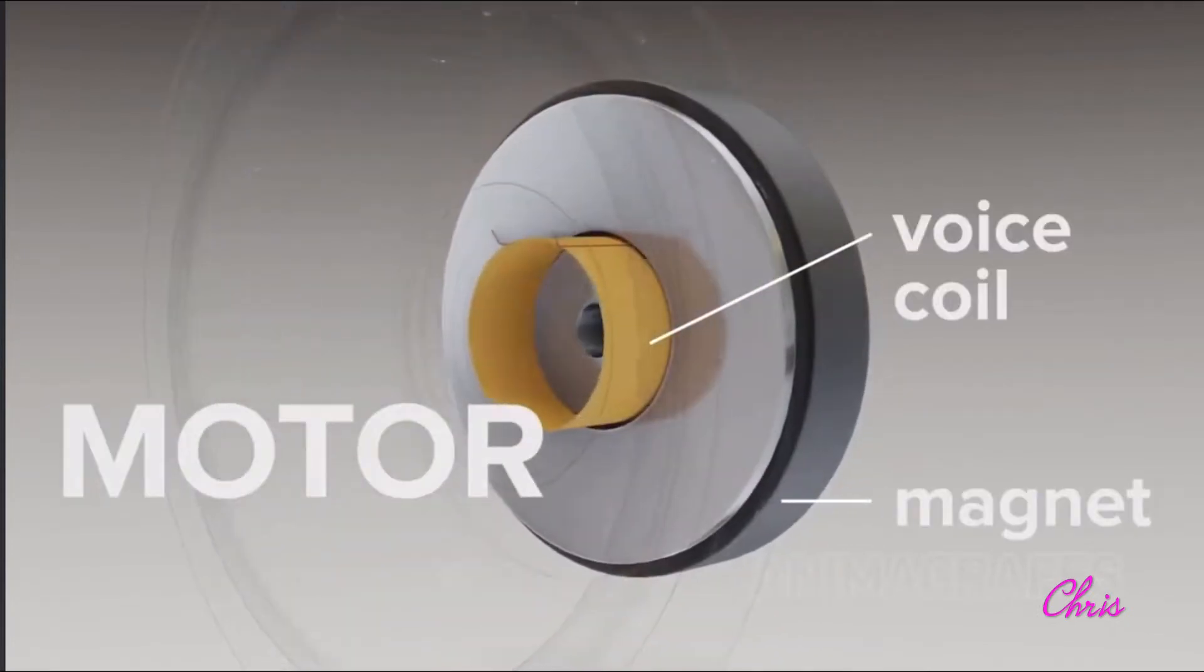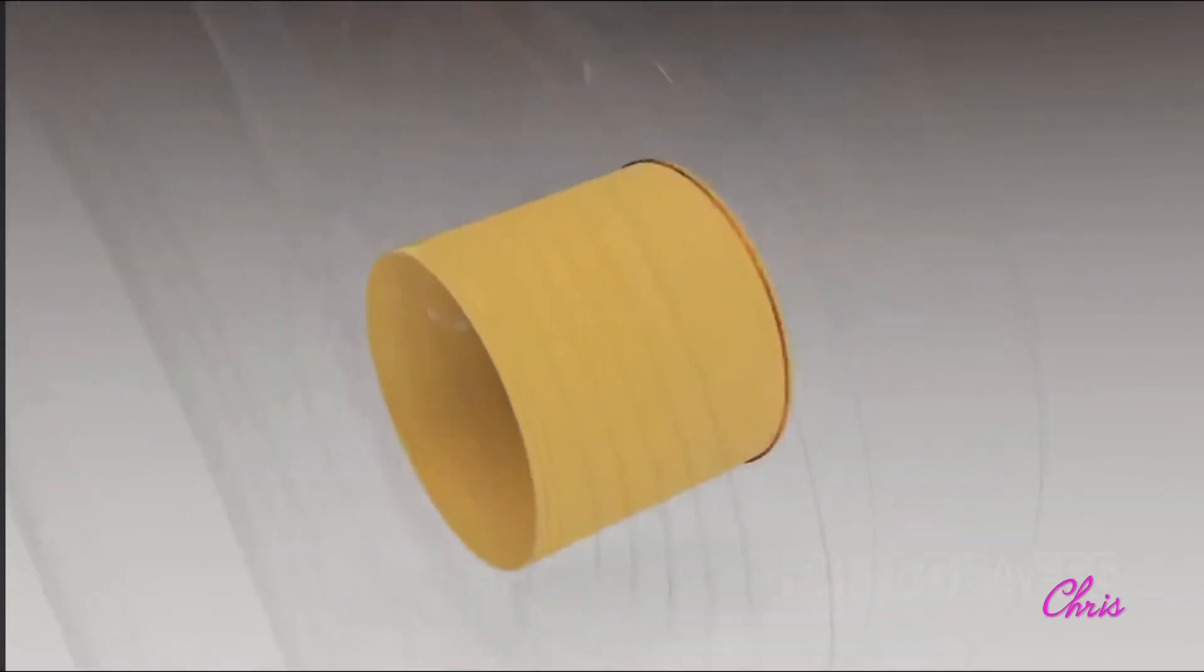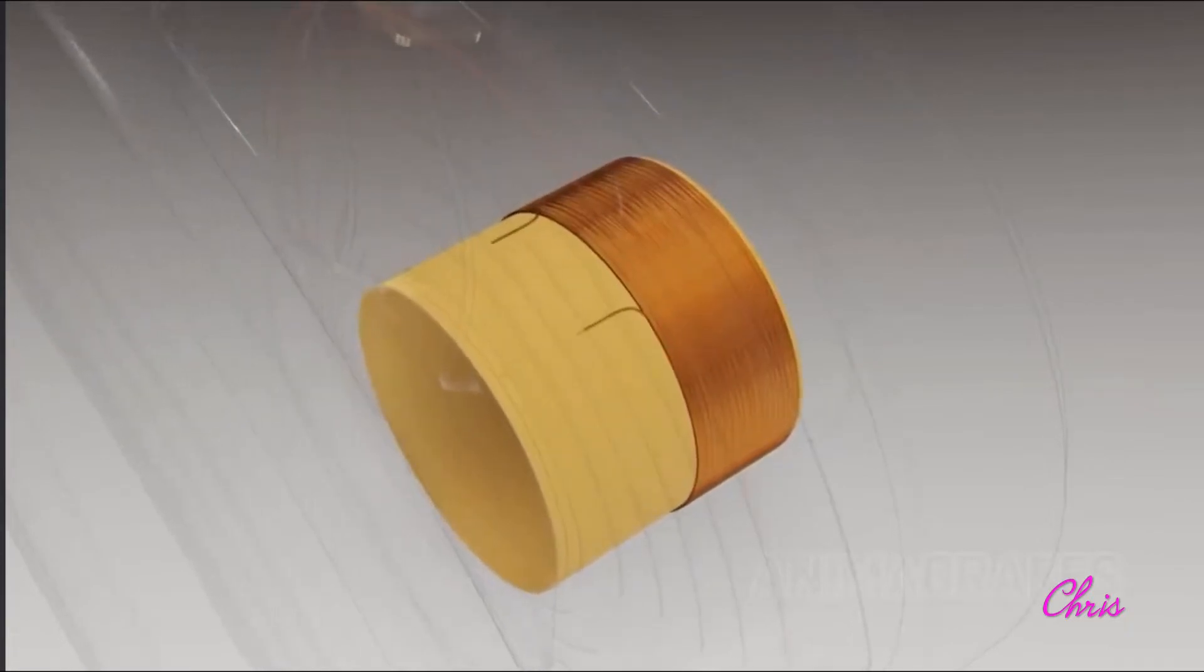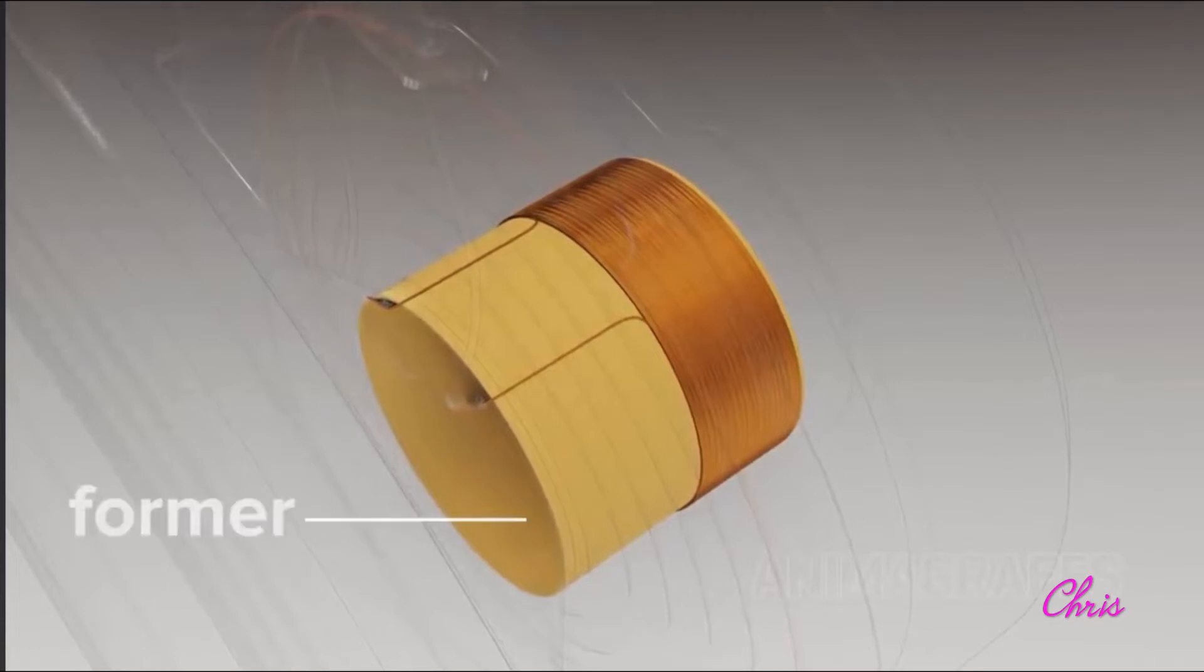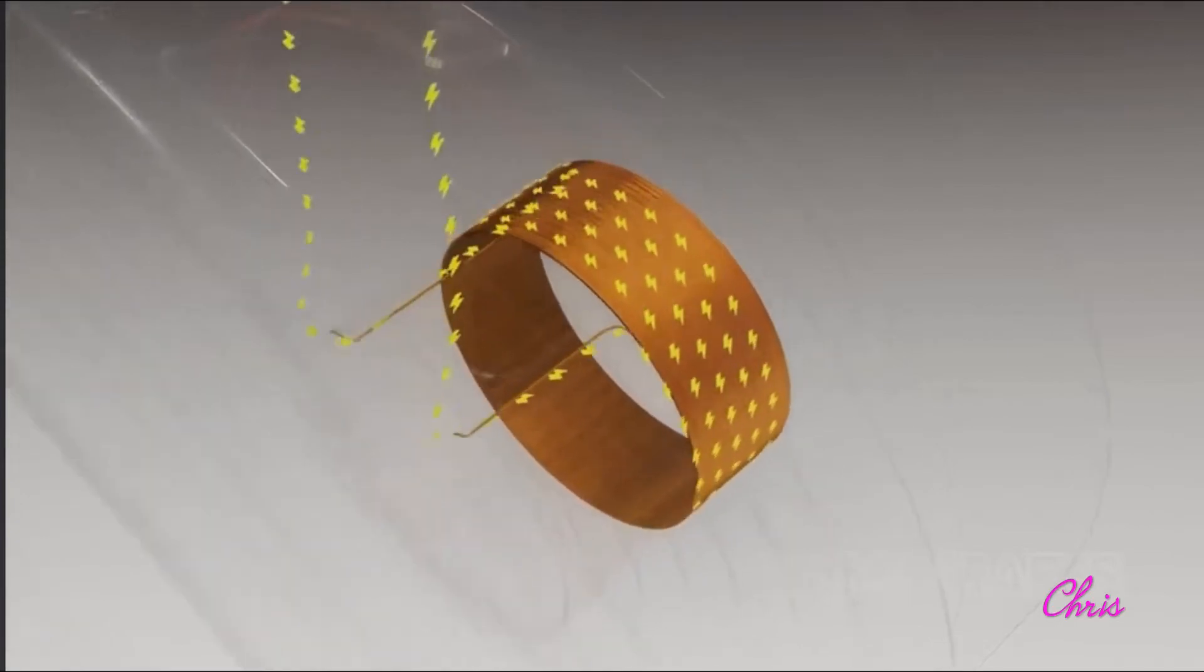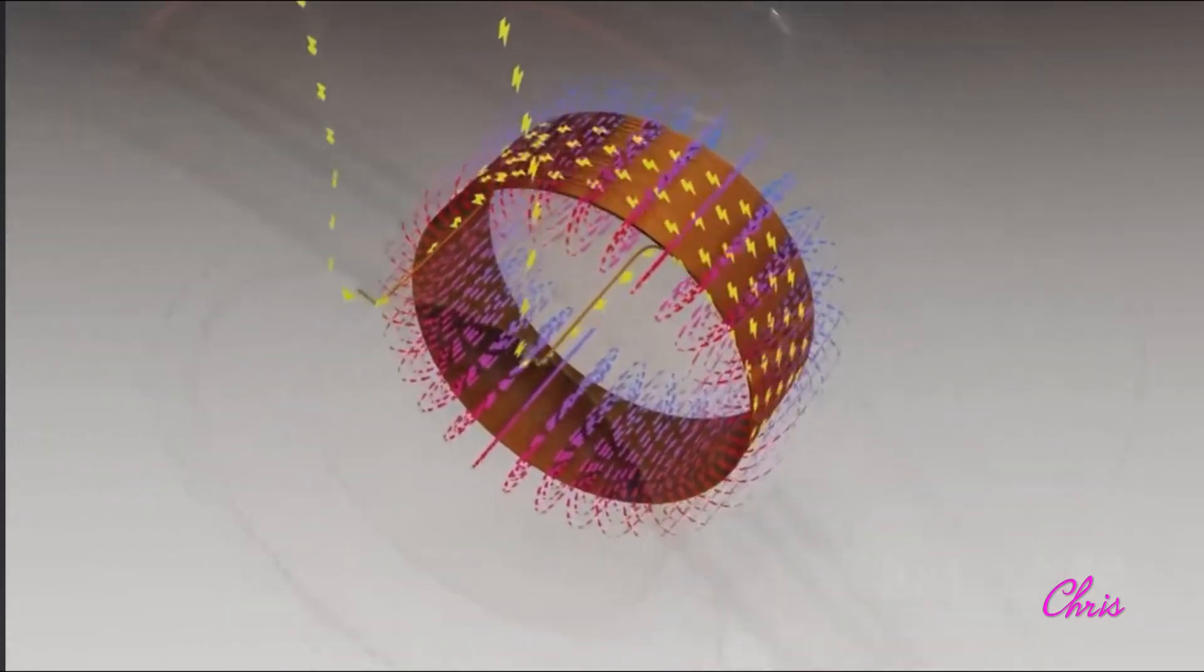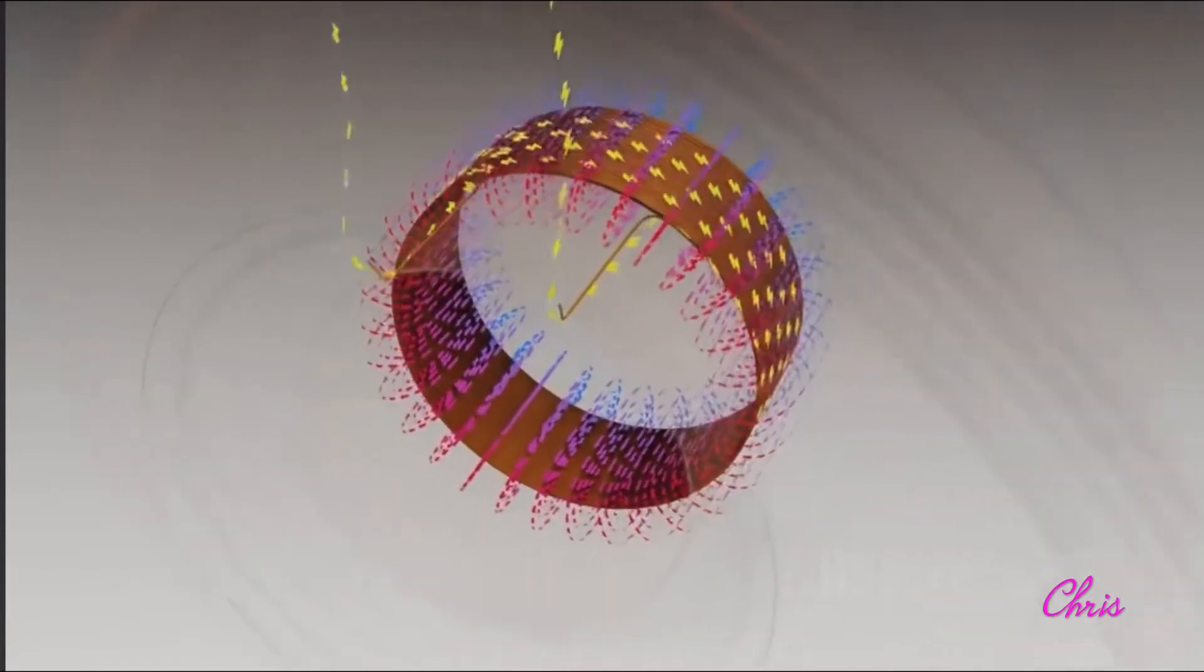The motor. A voice coil and magnet work together to form the speaker motor. The voice coil has a long section of thin copper wire wound many times around a heat-resistant cylinder called the former. When electricity flows through the copper windings, it naturally generates a surrounding magnetic field. This phenomenon is what makes an electromagnet.